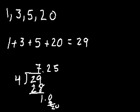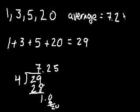So 4 goes into 29, 7.25 times. So the average of these four numbers is equal to 7.25.